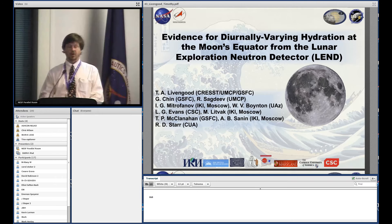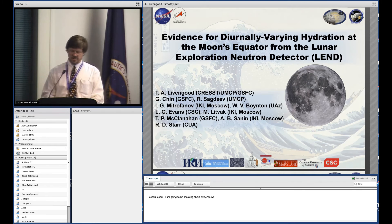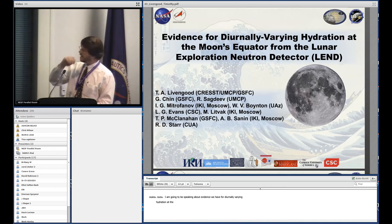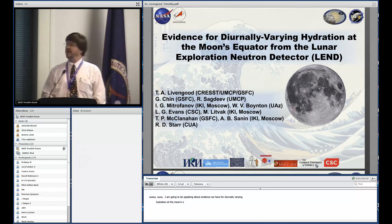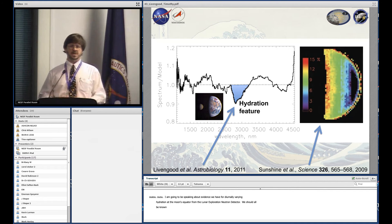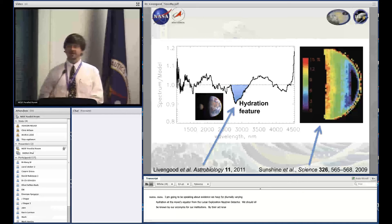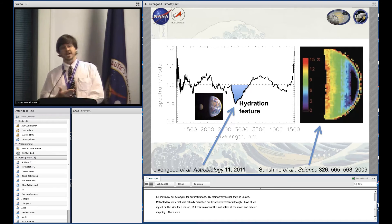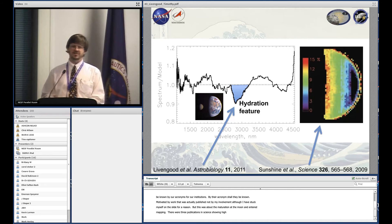Evidence for diurnally varying hydration, or really hydrogen, at the moon's equator using the LEND instrument on LRO. We have a large cast of characters as listed at the bottom. This is motivated by work published around the time LRO reached the moon and entered its mapping orbit. There were three publications in Science showing water of hydration, or OH of hydration, showing mineral hydration seen on the moon at low latitude.